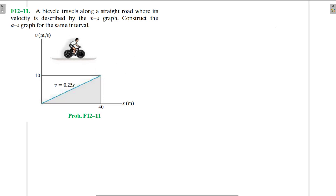Hello, I welcome you all to this another interesting screencast. We are going to be solving this engineering mechanics problem and it reads: a bicycle travels along a straight road where its velocity is described by the velocity-position graph. Construct the acceleration-position graph for the same interval.